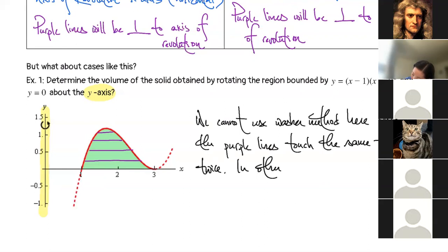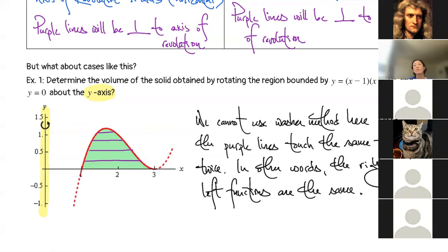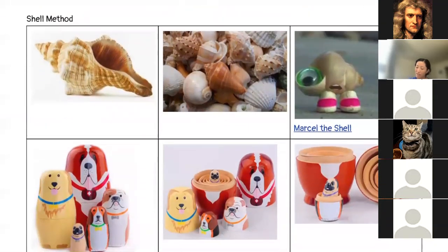Would I want to use right and left, or top and bottom here? Should I be using dx or dy if I have a y-axis as my axis of revolution? I would want to be looking for right and left and then dy. The right and left functions are the same, so in a situation like this, it would be very, very challenging to solve this using washer method. So we will spend today learning about a new method.